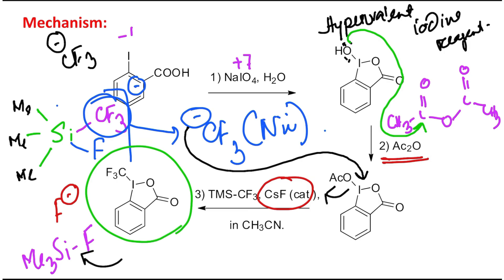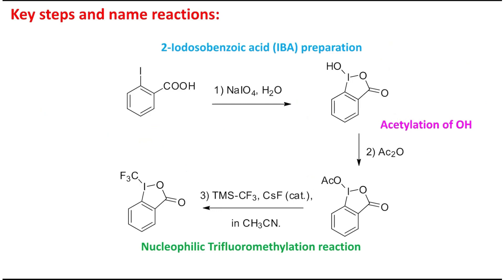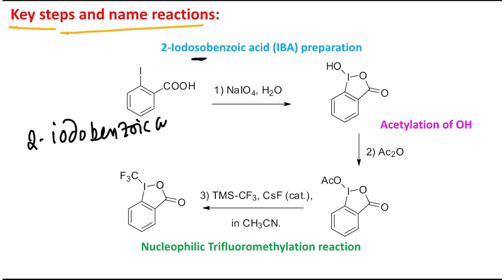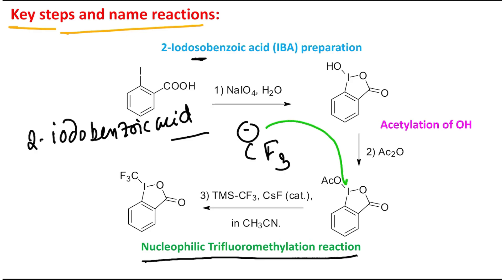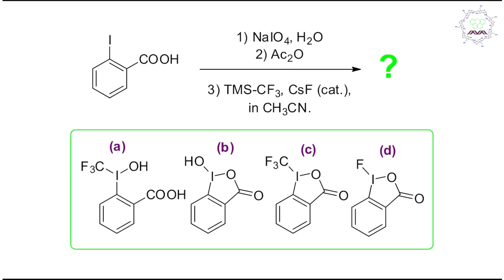So this reagent is produced — you may consider CF3 minus analogous to the Togni reagent in that way. Now looking at the key steps and name reactions in this overall discussion: the first step converts 2-iodobenzoic acid into 2-iodosobenzoic acid. Don't get confused by those names. This 2-iodosobenzoic acid then undergoes acetylation to produce the acetylated derivative, and later a nucleophilic trifluoromethylation reaction — nucleophilic because CF3 minus acts as a nucleophile and replaces the leaving group. In this way the product is produced.